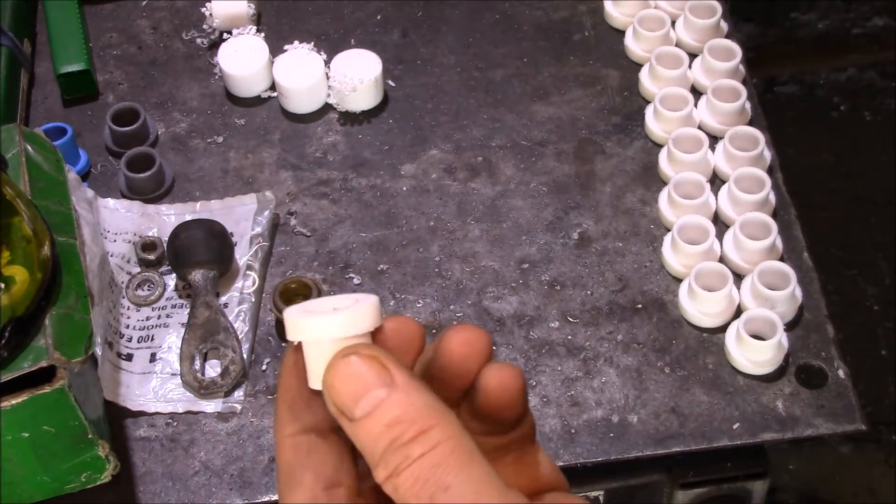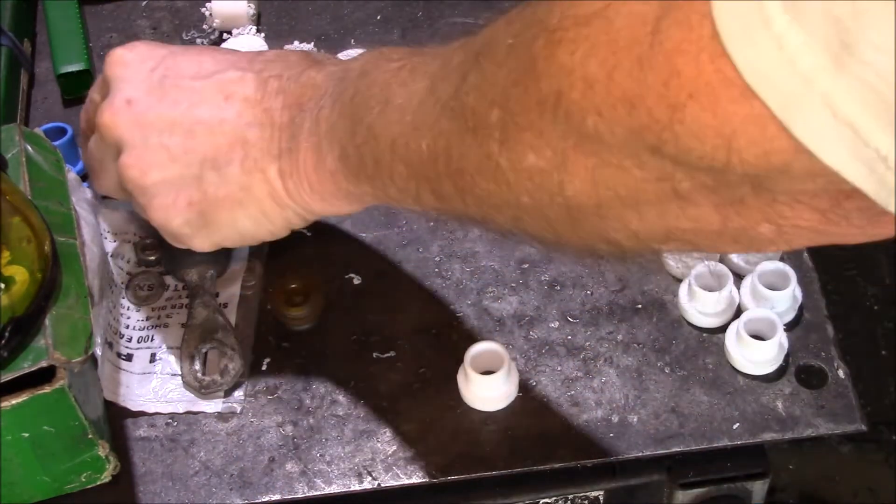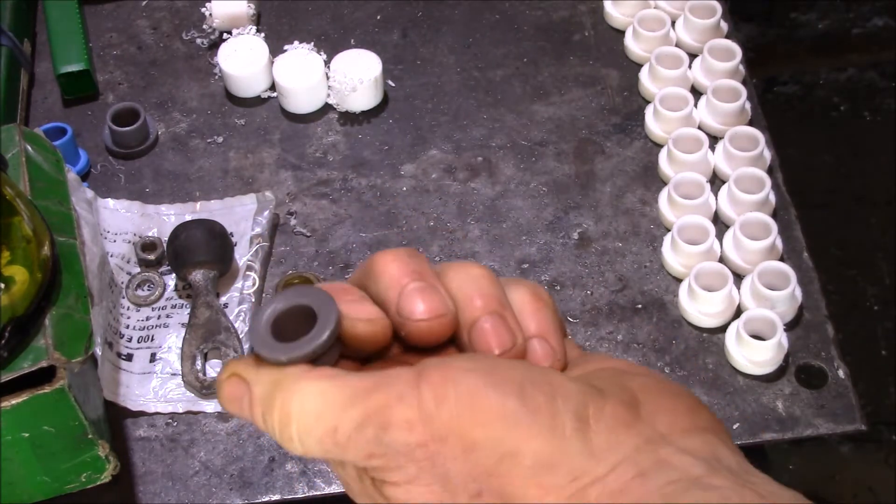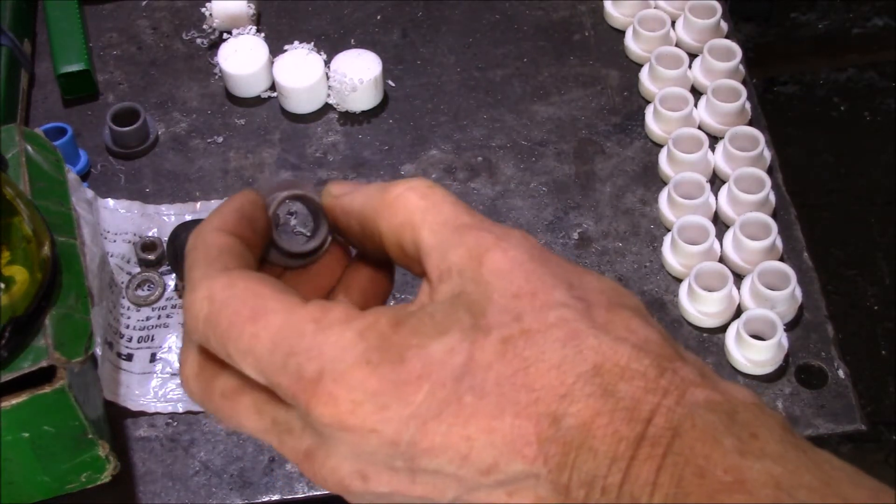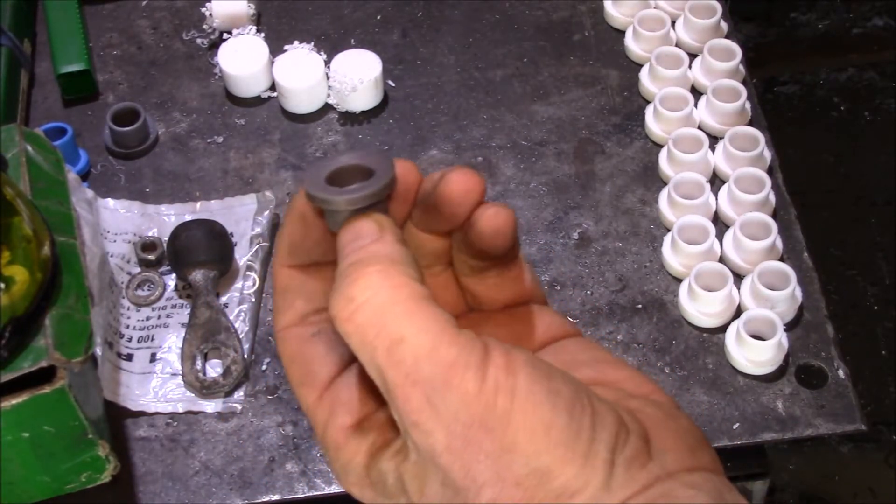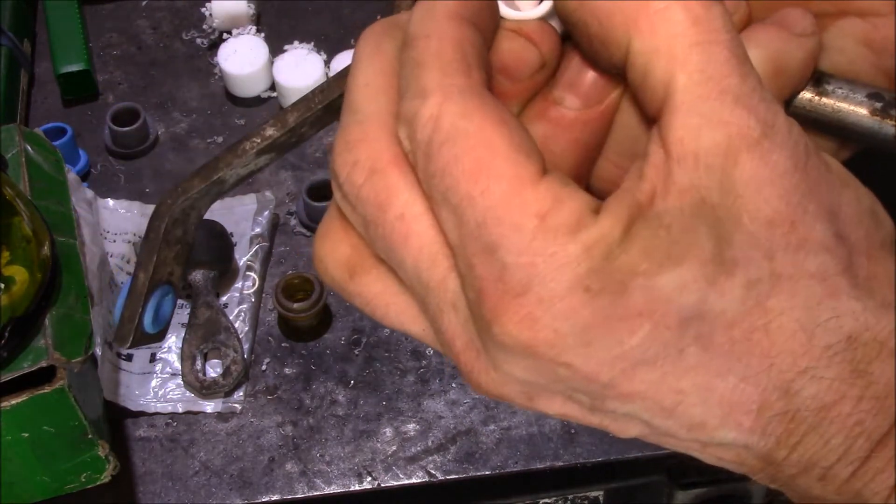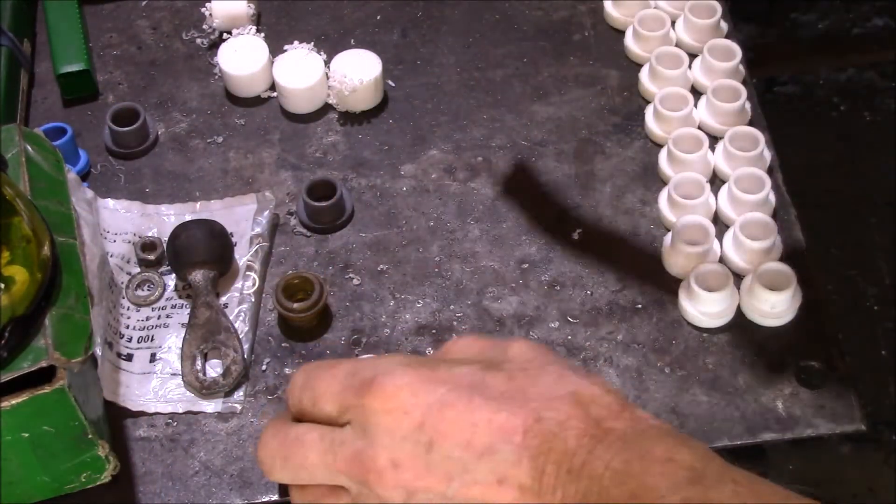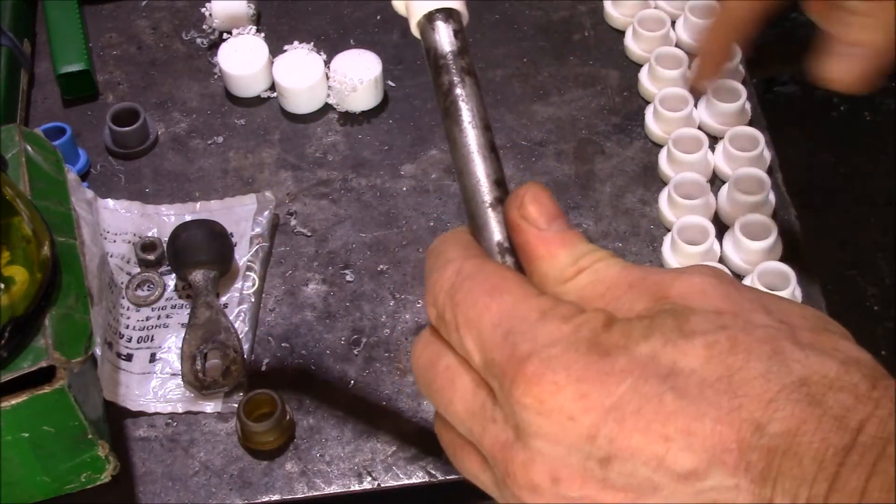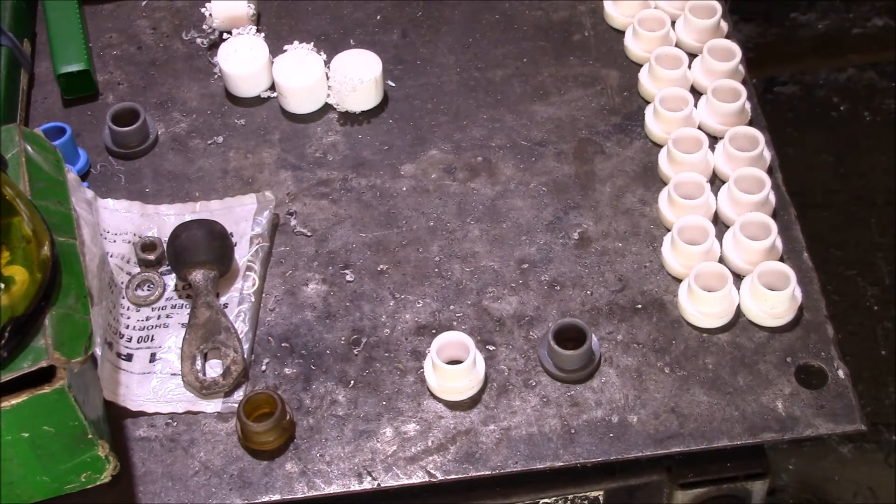One of the things we make is a replacement bushing. This one happens to be our Teflon model. We also make one in what's called UHMW polyethylene - ultra high molecular weight polyethylene. This is oil impregnated, that's what gives it that gray color. You can see I can barely squeeze this with all my force, where this one is just soft.